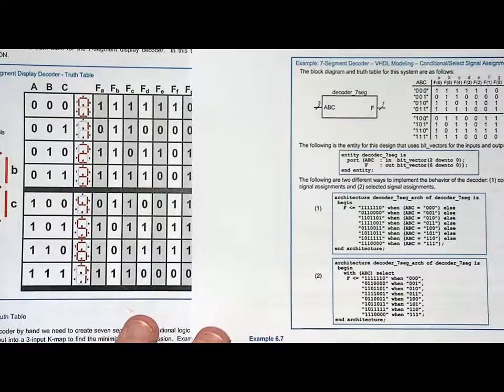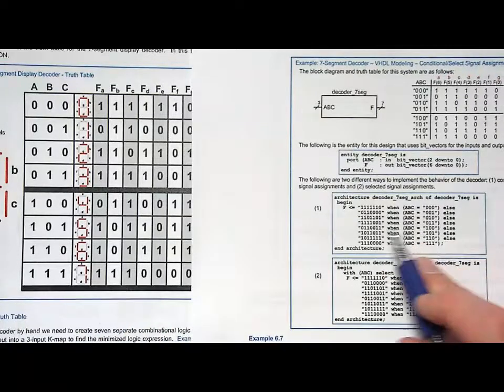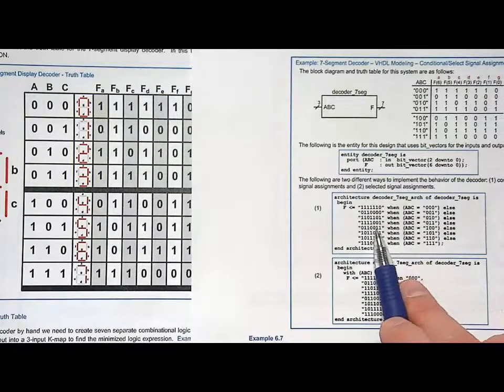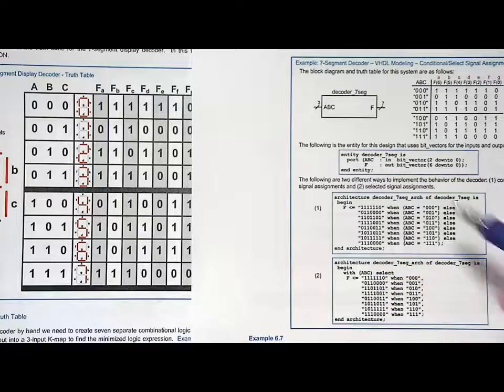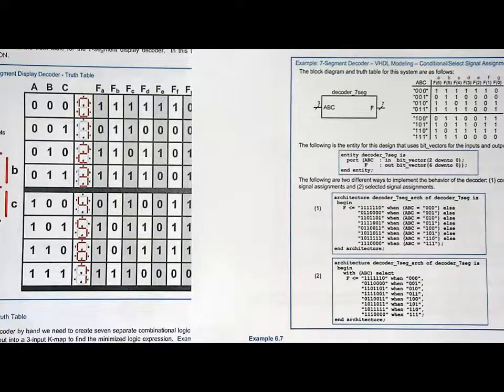So this is where you start seeing the power of VHDL because in such a compact description of behavior, you've actually created seven separate and unique combinational logic circuits, but you didn't have to go through the manual process of creating Karnaugh maps for each and every one. So that's the power of VHDL and MSI logic design.